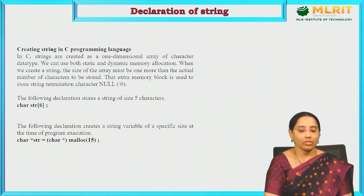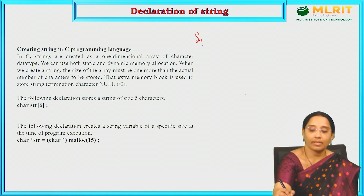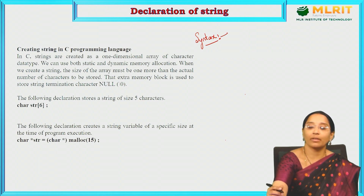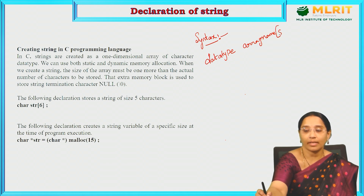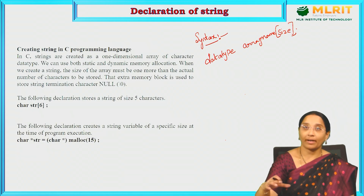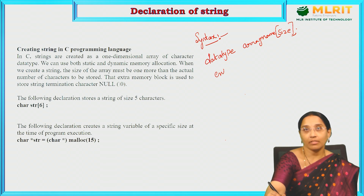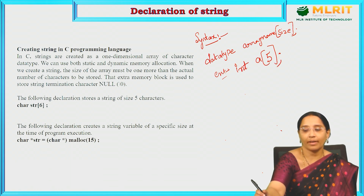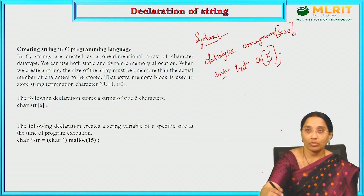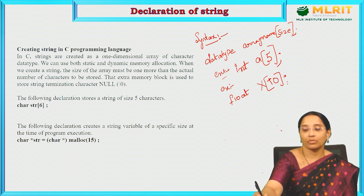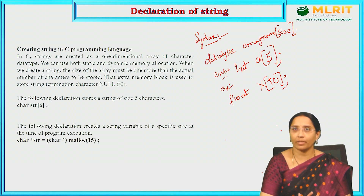How to declare a string? The normal syntax for an array is: data type, array name, and size. For example, int A[5] to store 5 integer values, or float to store 10 floating point values. But if you want to declare a string or a name, you can't use integer or float data types because string is not a data type in C programming language. We have to use the character data type only.